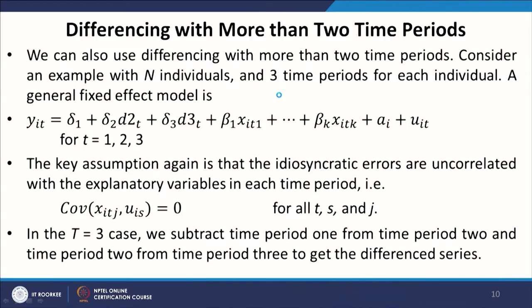Finally, we also want the error to satisfy the assumption of homoscedasticity. However, if it is not satisfied, we can always use GLS or FGLS as discussed when handling heteroscedasticity.